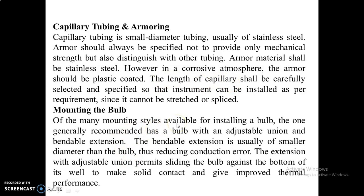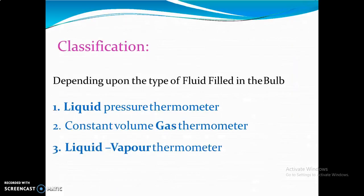Many mounting styles are available for installing the bulb. The mounting mechanism uses an adjustable union and bendable extension. The bendable extension is usually smaller in diameter than the bulb, reducing conduction error. The extension with adjustable union permits sliding the bulb against the bottom of its well for slight contact. Depending on the type of fluid filled in the bulb, there are three types: liquid pressure, constant volume gas thermometer, and liquid vapor thermometer.